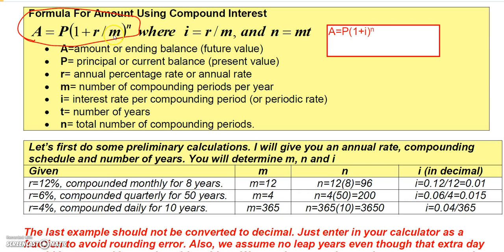When you divide r by m, you actually get the rate per compounding period. So that's why i is called the interest rate per compounding period, and n is your total number of compounding periods. Don't get n and m confused.